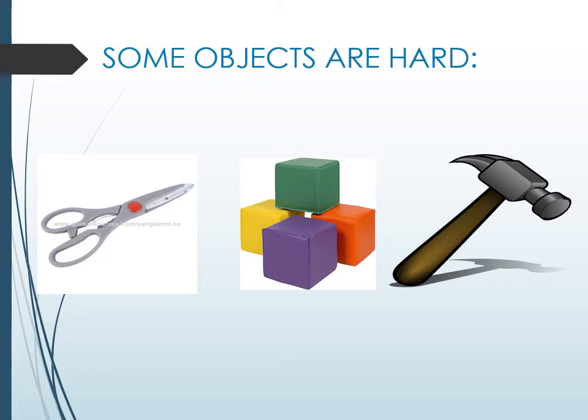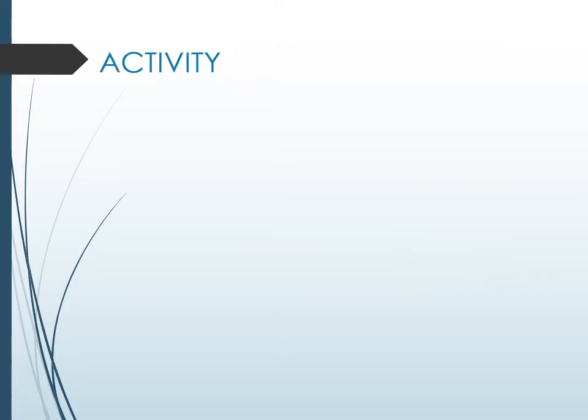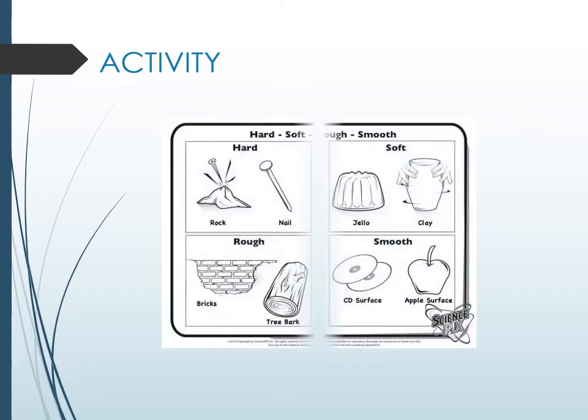Some objects are hard, like scissors, cubes, and a hammer. These are hard objects made up of hard textures. Here is an activity, and in this activity you can find different types of objects.